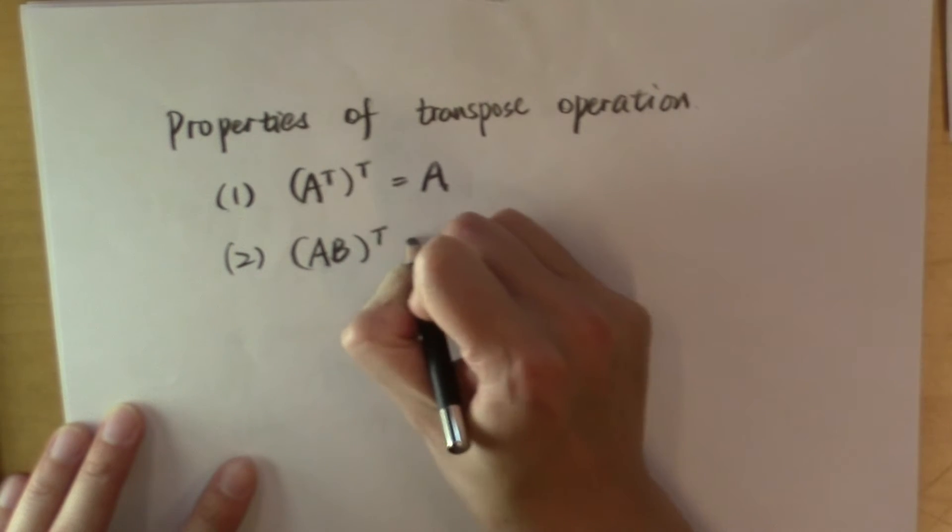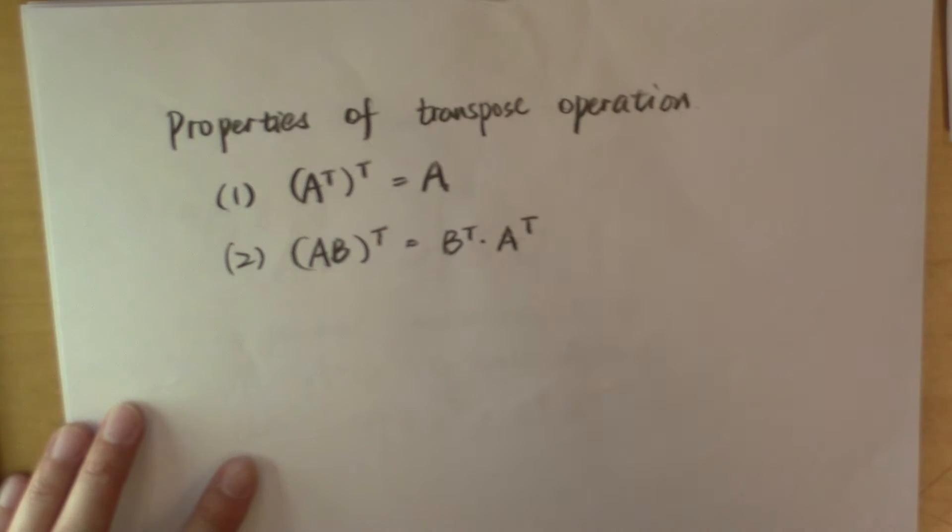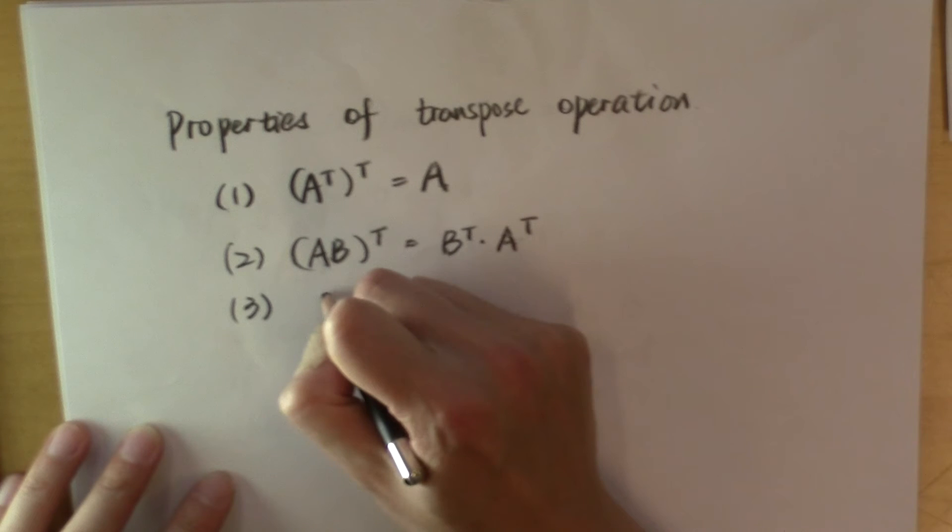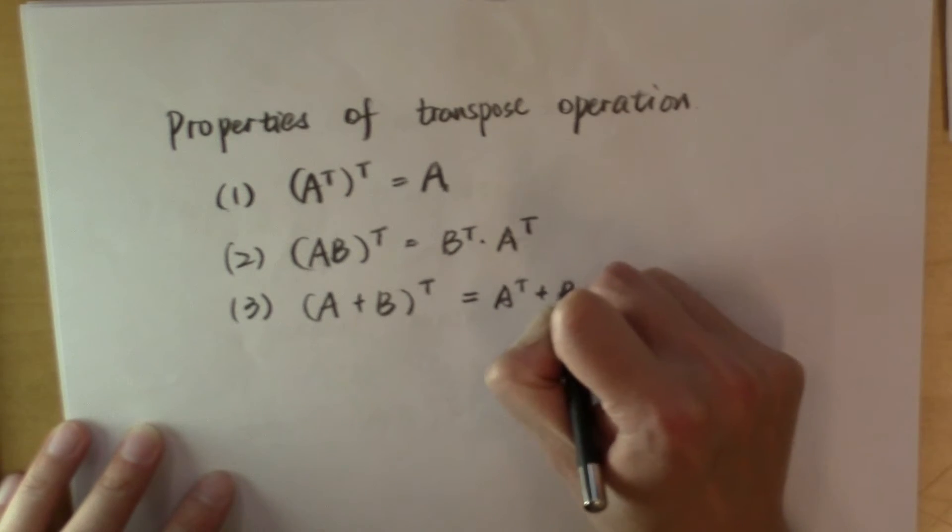AB transpose is equal to B transpose times A transpose. By the way, there are two other properties of the transpose operation that are kind of straightforward. I'm going to leave it to you to verify. A plus B transpose is equal to A transpose plus B transpose.